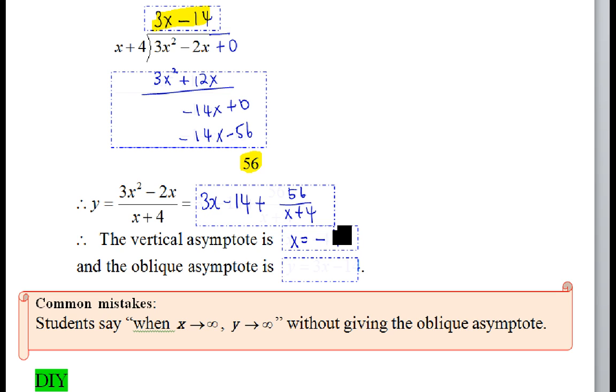What about oblique asymptote? Because as x tends to infinity, this thing tends to zero. Alright? Then y behaves like 3x minus 14.